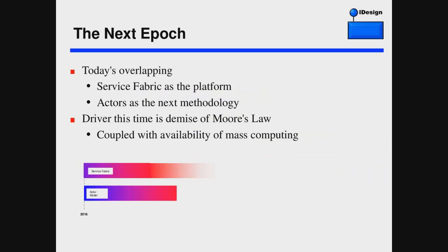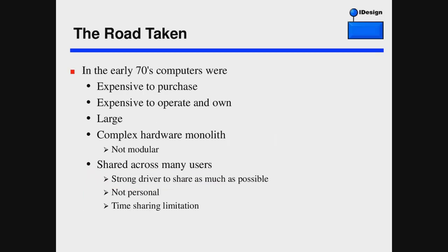Each one of those cycles has a different driver — what made it come into being. The driver this time is the demise of Moore's Law coupled with the availability of mass computing. In the early 70s, a road appeared in front of software engineering, and just like the poem, we took one road. Unfortunately, we've reached the end of that road. Let's discuss the road taken.